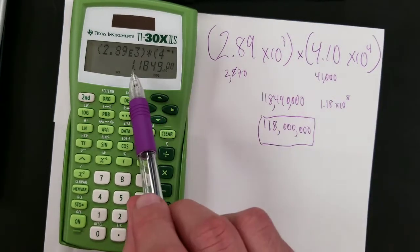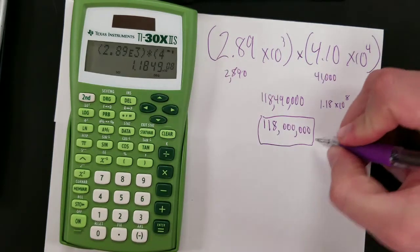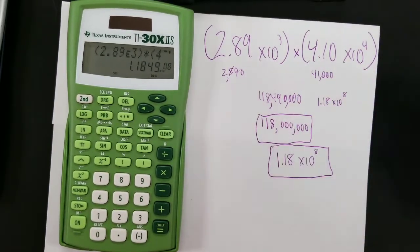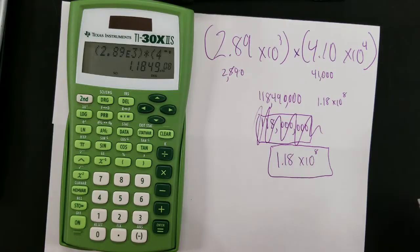Right? After all, you'd round this to 3 sig figs. 1, 2, 3rd significant figure here. 1.18 times 10 to the 8th. Then I suppose on an exam I'd scribble this out just to make clear that that's not my final answer.